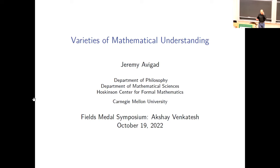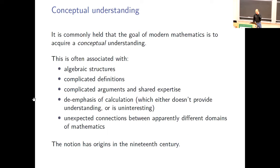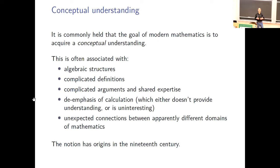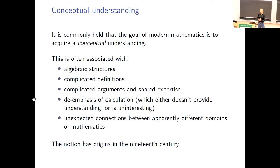The essay explores the way we think about mathematical understanding. If you talk to mathematicians, they'll tell you that one of the key goals of modern mathematics is to acquire a certain type of conceptual understanding. I've never seen a precise definition of what it means to be conceptual, but there are a lot of associations commonly associated with it. High on the list is being algebraic — conceptual mathematics uses a lot of algebraic structures. More generally, conceptual means having the right concepts or the right definitions, and as mathematics evolves the definitions get more complicated. Having the right definitions is important. It also depends on having conceptual scaffolding — building on a lot of theory.